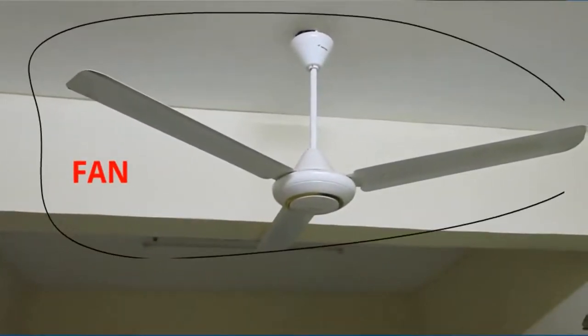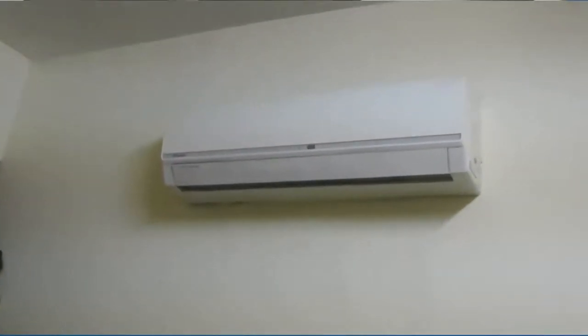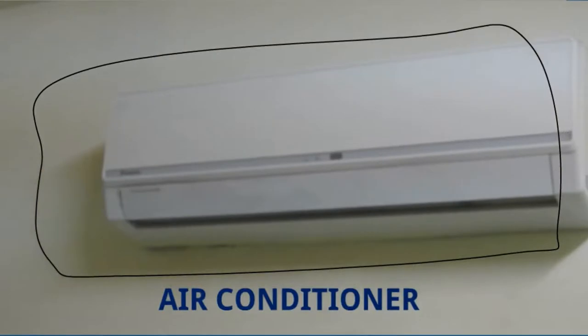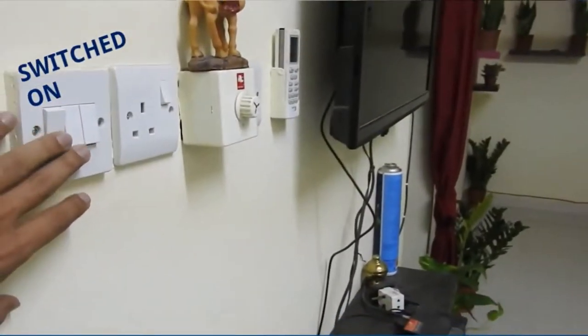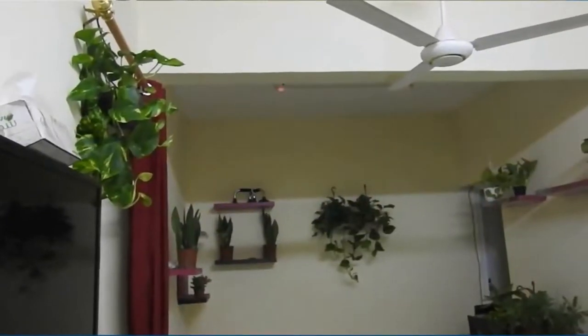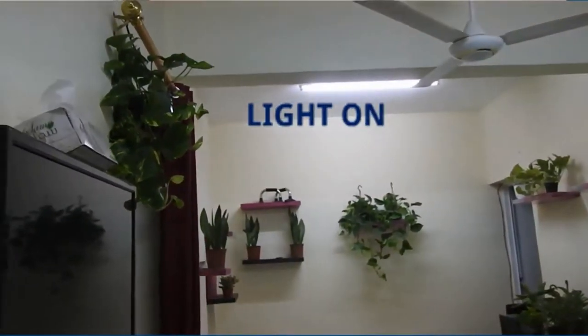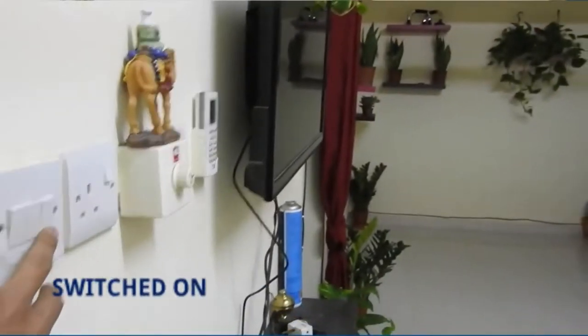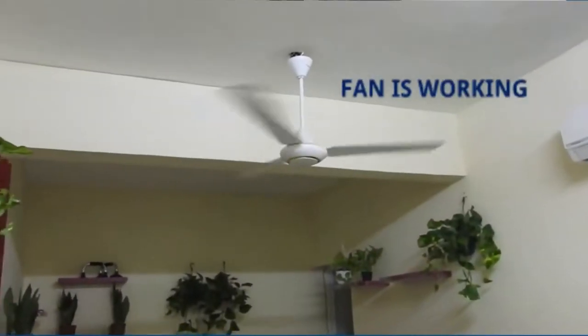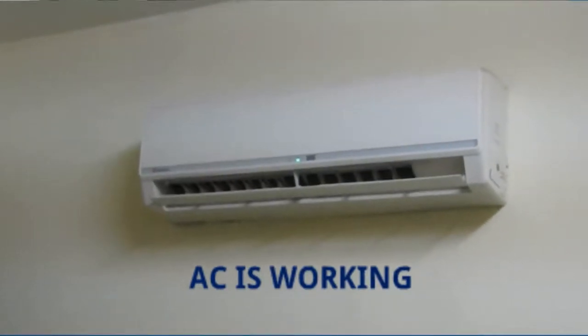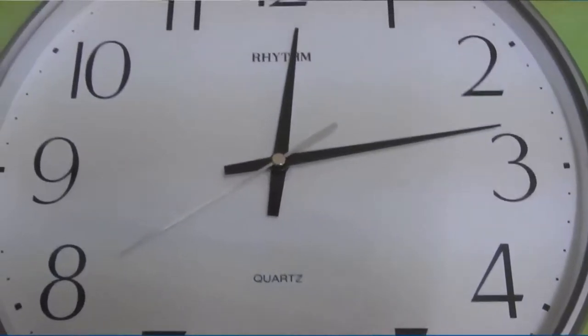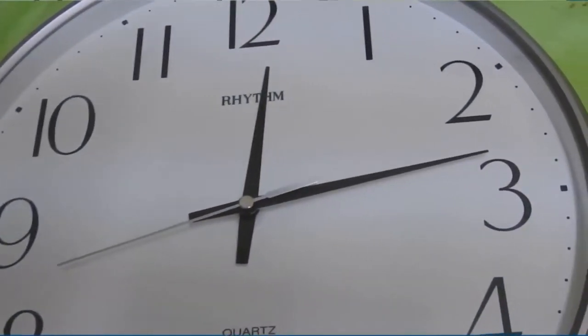If we switch on, then this light is on. If we switch on for the fan, then the fan is working. If we switch on for the air conditioner, then this AC will start and we will get very cold air. Look at this wall clock, it's working now.